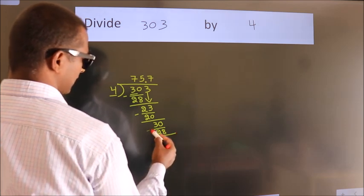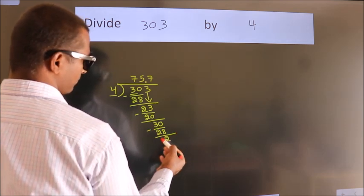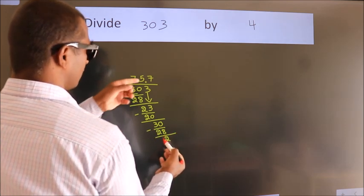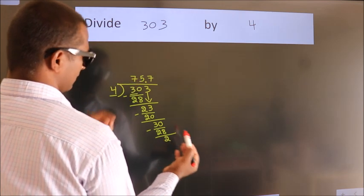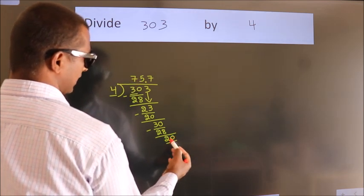Now we subtract. We get 2. After this, we already have the decimal, so directly take 0. So 20.